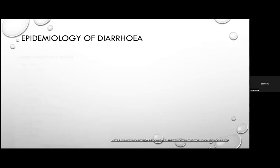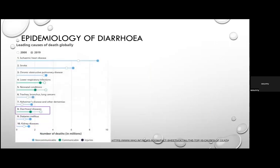Looking at the epidemiology of diarrhoea from the World Health Organization: among the top 10 leading causes of death globally between 2000 and 2019, diarrhoeal diseases rank number eight. In 2019, diarrhoea-related deaths in those aged 15–49 were 135,892; in those aged 50–69, 233,400; and over age 70, 600,935 deaths. More than one-third of deaths occurred in children under five.